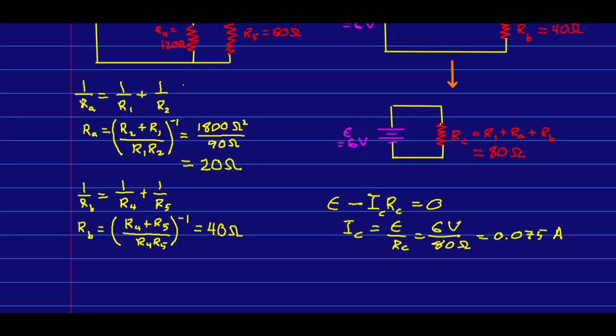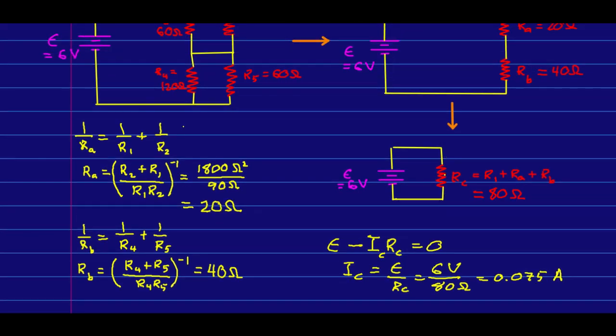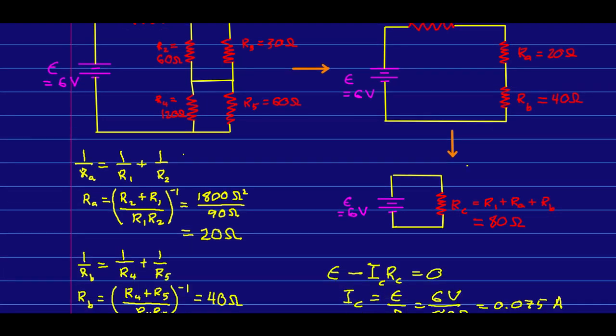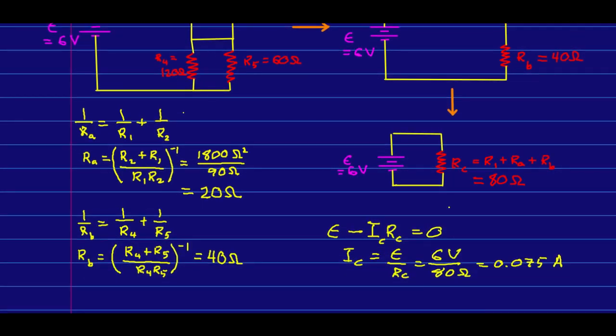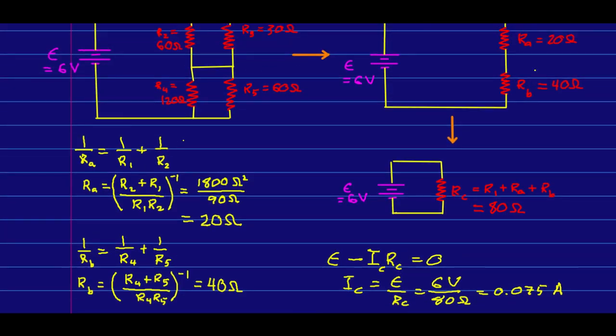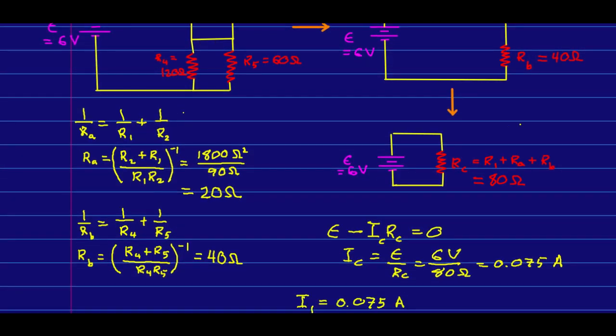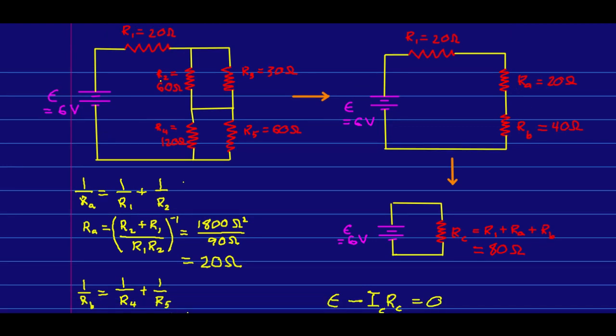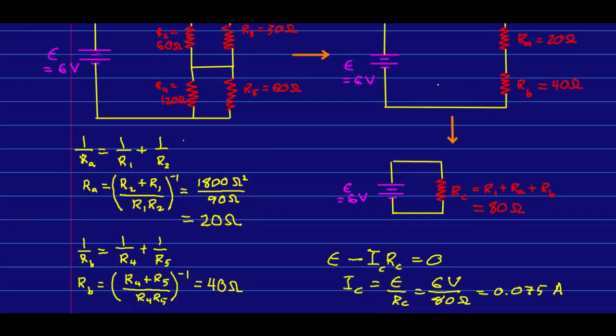So note that that is the current through Rc, which is the current through each of R1, Ra, and Rb. So that is I1, so we now know one of the currents we want. But Ra and Rb aren't things we're actually looking for currents through. We want the currents through 2, 3, 4, and 5.